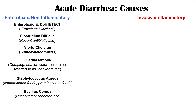Another cause is Bacillus cereus, found in uncooked or reheated rice. Rice contains spores of Bacillus cereus; if not cooked adequately, those spores survive and the bacteria can proliferate, leading to enterotoxic acute diarrhea. It's important to always cook and reheat rice adequately. Most causes of enterotoxic acute diarrhea are bacteria, with Giardia lamblia being one protozoal exception. There are also viruses that can cause enterotoxic acute diarrhea, including norovirus, rotavirus, and cytomegalovirus (CMV).